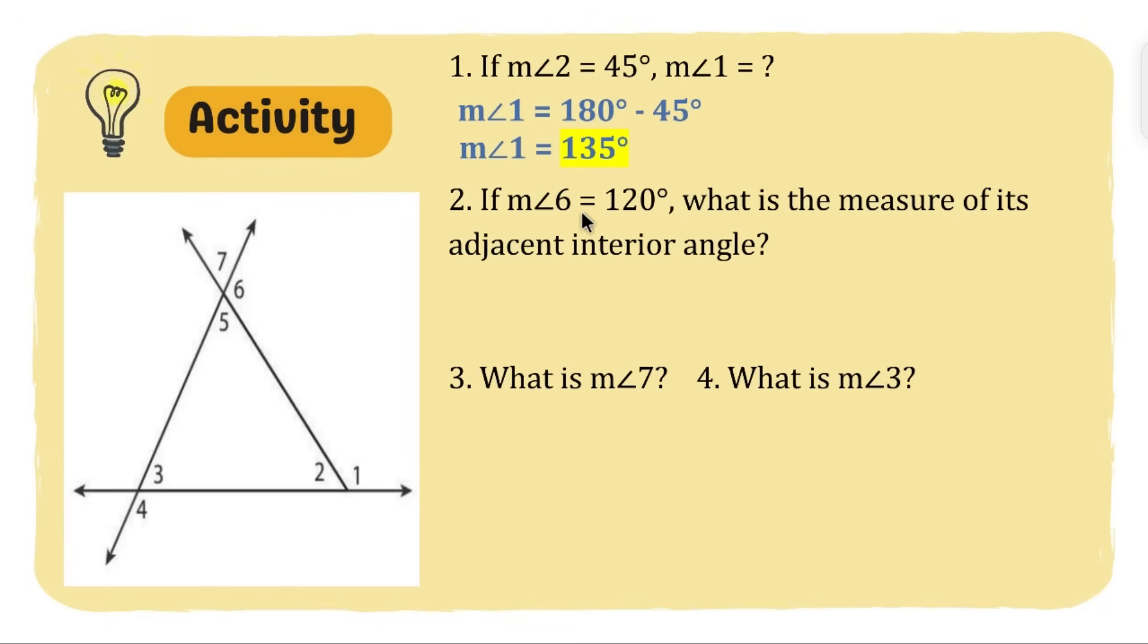For number two, if the measurement of angle 6 is 120 degrees, what is the measure of its adjacent interior angle? The first question here is which one, 7 or 5, is the adjacent interior angle? Correct, it should be angle 5 because angle 5 is in the interior of our polygon, which is a triangle. Angle 7 is not an interior angle. So our solution: the measurement of angle 5 is equal to 180 degrees minus 120 degrees, which is the angle pair of angle 5. Therefore our answer is 60 degrees.